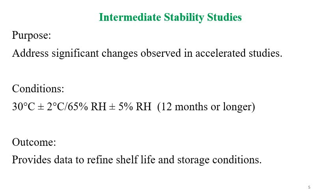Intermediate stability studies are performed to address significant changes observed in accelerated studies. If there is any significant change such as impurity generation, assay or potency loss, or failure of dissolution, you can refer to intermediate study data. The conditions are 30°C and 65% RH. These studies can be done for 12 months or longer and provide data to refine the shelf life and storage conditions.